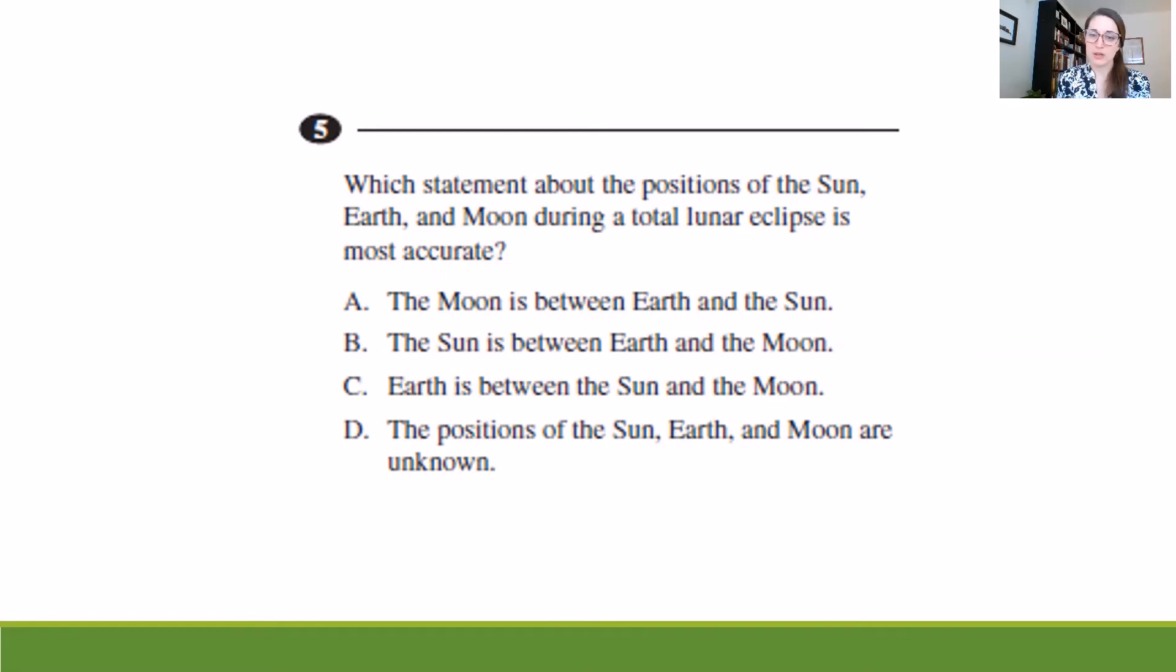So which one of these is true or most accurate? The moon is between the earth and the sun. The sun is between the earth and the moon. The earth is between the sun and the moon. Or the positions of the sun, earth, and moon are unknown. Well right away I can rule out D because we have an image that shows us the positions of the three of them. So I just need to figure out what order they're in. Maybe you already remember. Let's take a look.